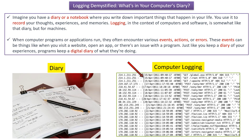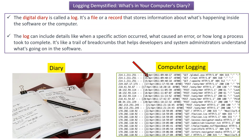When computer programs or applications run, they often encounter various events, actions or errors. These events can be things like when you visit a website, open an app, or there is an issue in the program. Just like you keep a diary of your experiences, a program keeps a digital diary of what it is doing. That digital diary is nothing but a log — a file or record that stores information about what is happening inside the software or the computer.